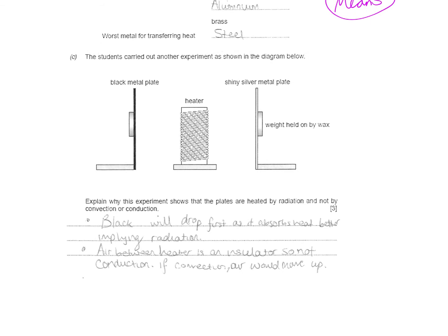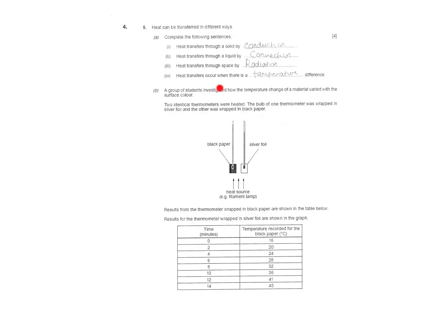Explain why this experiment shows the plates have been heated by radiation and not convection or conduction. Black will drop first. You've got two different metal weights held on by wax - one's silver, one's black. Black will drop first as it absorbs radiant radiation better. The air between the heater is an insulator, so it's not convection. If it was convection, the air would move up. Heat is transferred through solids by conduction, through liquids by convection, and through space by radiation. Space is to do with it being a vacuum, so there's no particles up there. Heat transfers occur when there is a temperature difference.